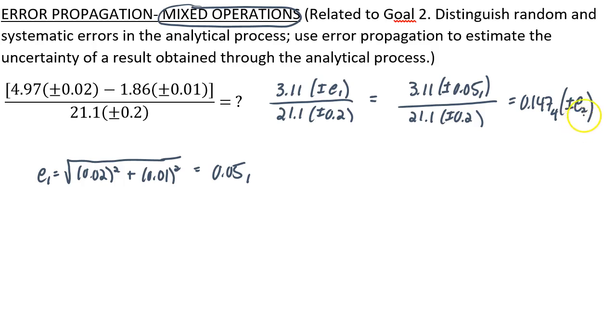So now we'll solve for E2, but looking at our arithmetic, which involves division, we're going to have to use percent relative error. The percent relative error of that quotient is going to be the square root of the percent relative error of our first measurement squared. So that'll be 0.05 over 3.11 times 100, the quantity squared, and then the same thing for the second measurement, 0.2 over 21.1 times 100, the quantity squared. And when I did this arithmetic, I got 1.9 percent.